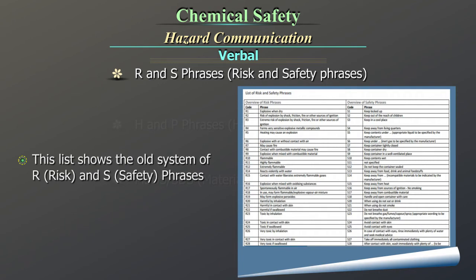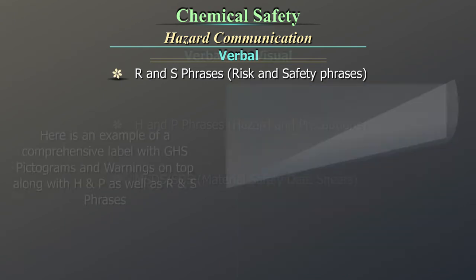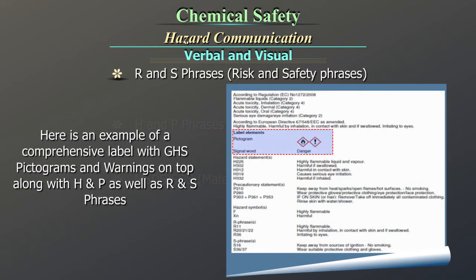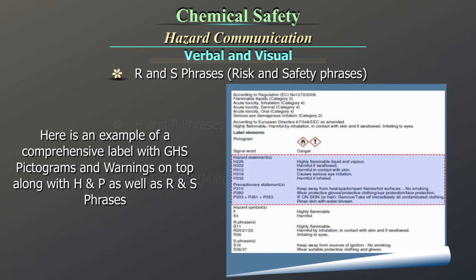R and S phrases — Risk and Safety phrases. This list shows the old system of R (risk) and S (safety) phrases. Here is an example of a comprehensive label with GHS pictograms and warnings on top, along with H and P as well as R and S phrases.